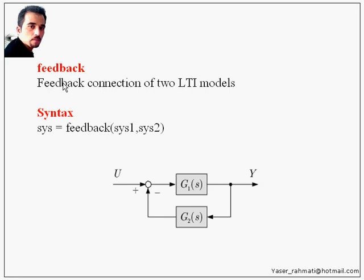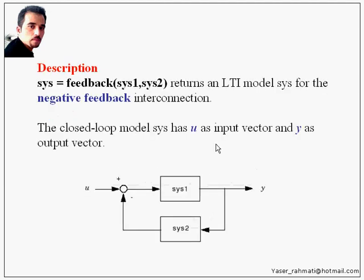The feedback function is used for feedback connection of two LTI models. Its syntax is: sys = feedback(sys1, sys2). Note: this uses negative feedback only. Sys1 has been represented by G1 and sys2 has been represented by G2. This is the plant transfer function and this is the controller transfer function. sys = feedback(sys1, sys2) returns an LTI model sys for the negative feedback interconnection. The closed-loop model sys has u as the input vector and y as the output vector. Pay attention to the sign of the adder.